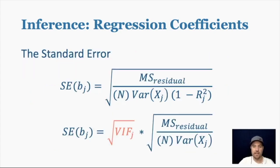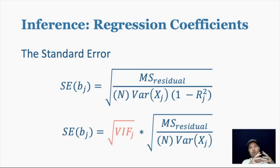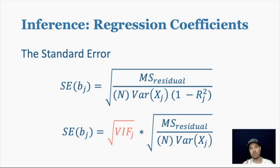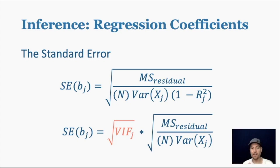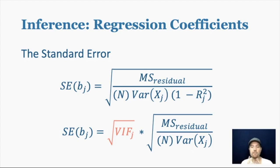We can redefine the standard error as the square root of the variance inflation factor times the other pieces — MS residual, N, and the variance of X. So if the VIF goes up, your SE goes up. If MS residual goes up, your SE goes up. If N goes up, your SE goes down. And if the variance of X goes up, your SE goes down. If this is confusing, review it multiple times because this is a very important concept.